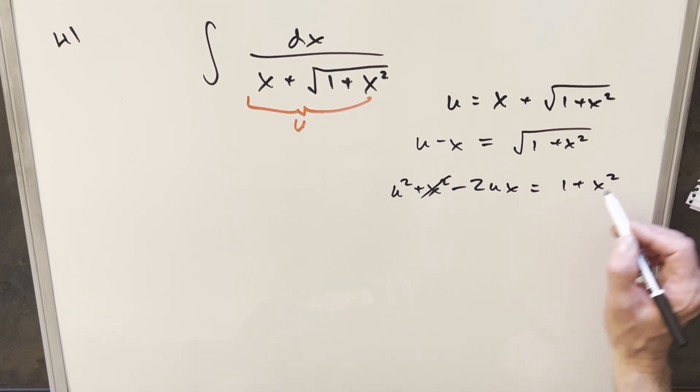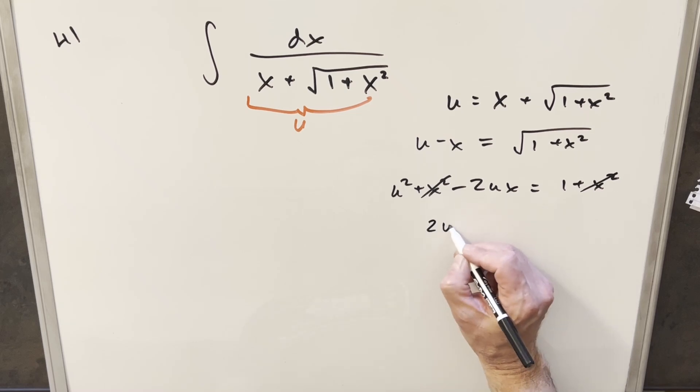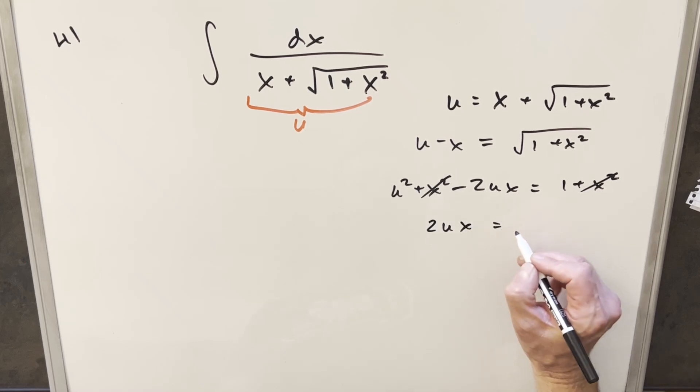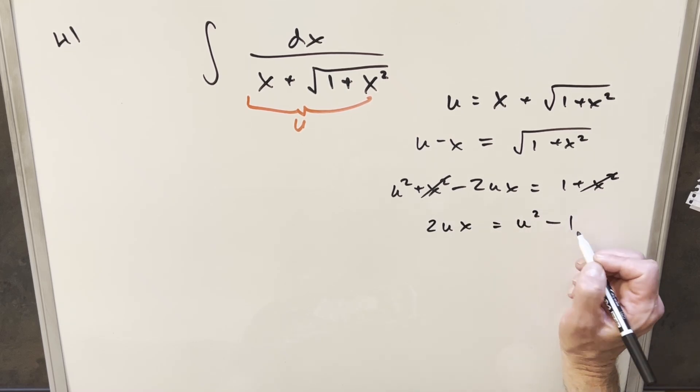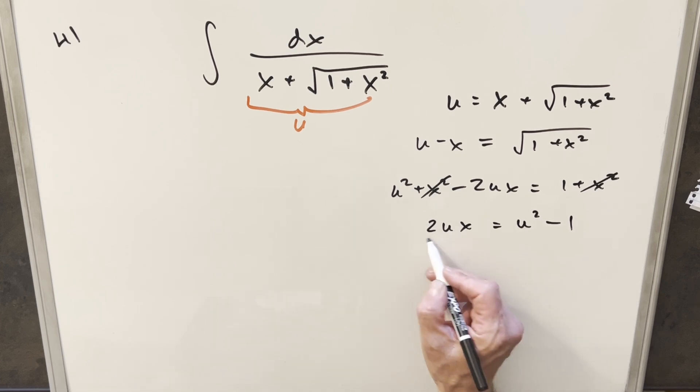But the x squared is going to cancel on both sides. We can rearrange this and write this as 2ux equal to u squared minus 1. I want to isolate the x, so I'll divide off 2u on both sides, and that's going to give us our value here for x.